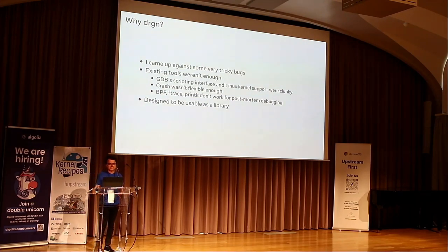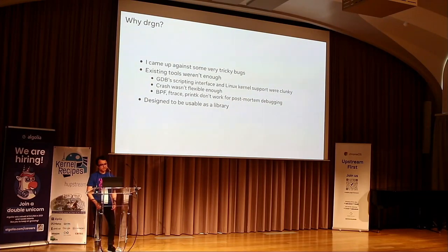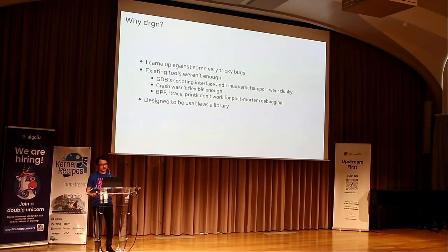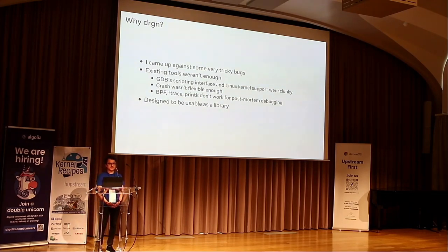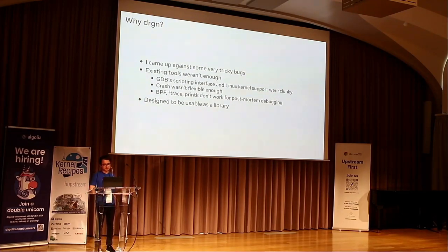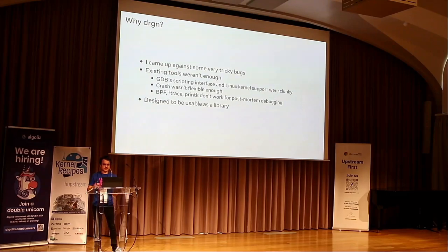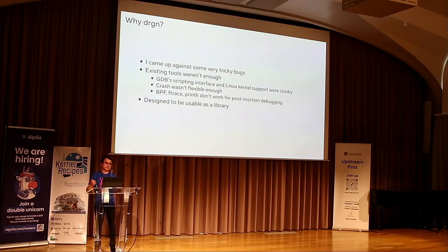Anytime I tried to point GDB at the running kernel or a vmcore I had a bunch of issues. Then there's crash, which is a tool specifically built for the Linux kernel — essentially a bunch of extensions on top of GDB. I used this a lot and it was super useful. Crash defines commands that know about common kernel data structures, kind of like Drgn helpers, but anytime I wanted to do anything beyond what those built-in commands could do I had to jump through hoops, usually dumping to a text file and post-processing with awk and grep.